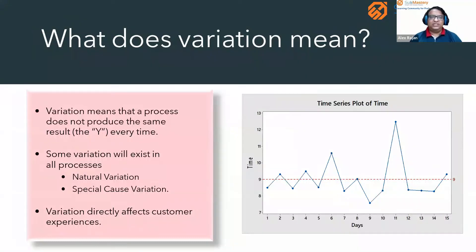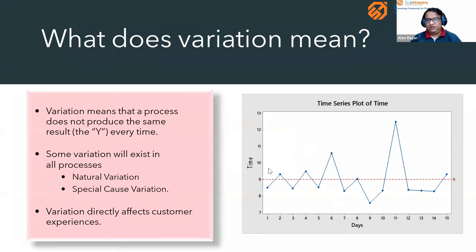What is variation? Variation means a process is not producing the same results every time. Let us take a simple example that we can relate to.